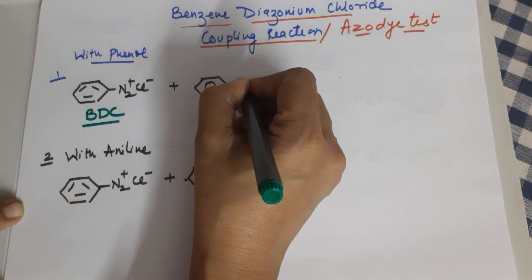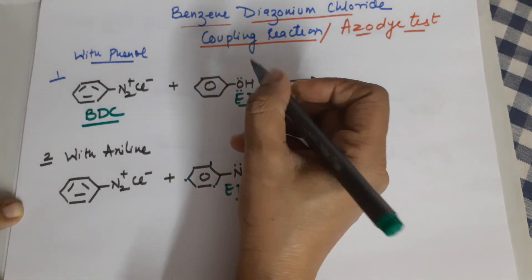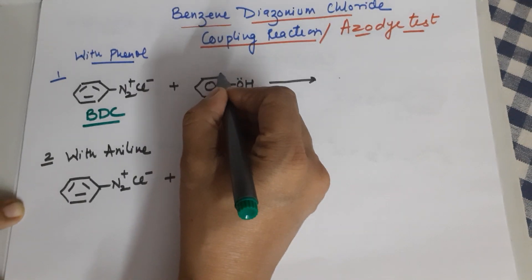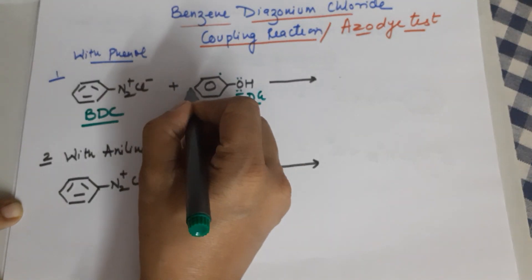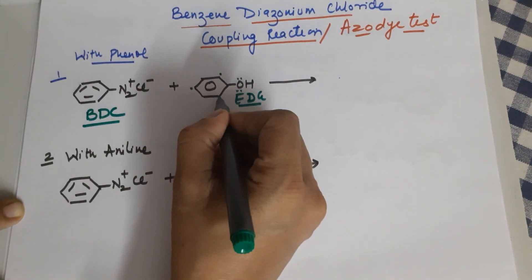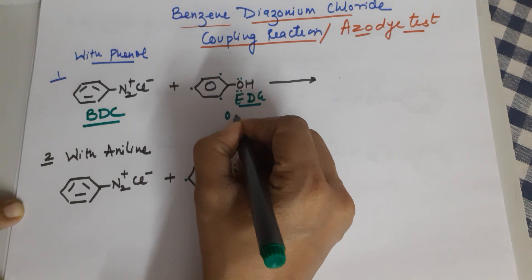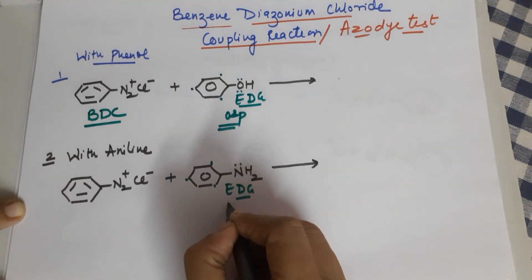Phenol, when it gives electrons to the benzene ring due to resonance, we find the electron density — that is the negative charge — is at ortho as well as at the para. They are called ortho and para directing groups.